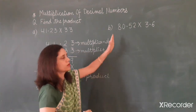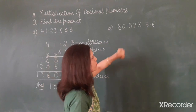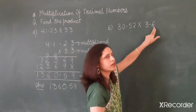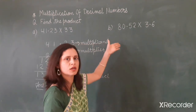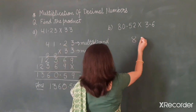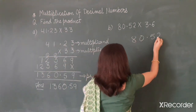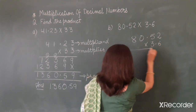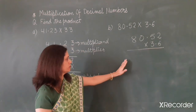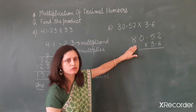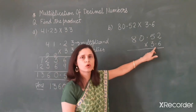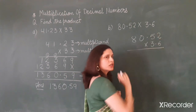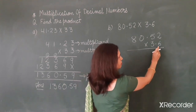Now friends, come to the next example. Here we have to multiply 80.52 and 3.6. First we will arrange these decimal numbers column wise. We will multiply these two numbers without considering the position of the decimal point. The first decimal number is known as the multiplicand and the second decimal number is known as the multiplier. We start with 6.